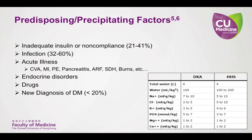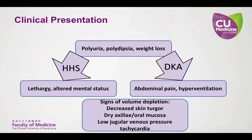Fifty percent of deaths associated with HHS occur within the first 48 to 72 hours of presenting to the hospital. Neurologic deterioration primarily occurs in HHS patients with an effective plasma osmolality above 320 to 330. Coma won't be seen until serum osmolality is above 330 or 340, and it is fairly rare to see a patient in a coma from HHS.